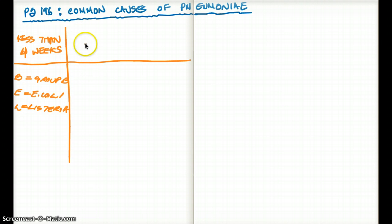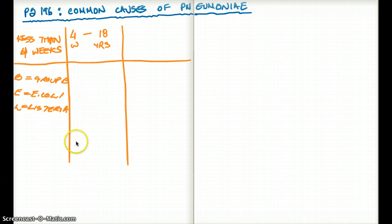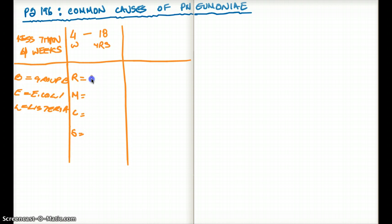The second category deals with 4 weeks to 18 years, and we use the mnemonic 'Runtz May Cough Sputum.' R is for RSV, M is for Mycoplasma, C is for Chlamydia, and S is for Strep pneumo. These are the most common causes of pneumonia between 4 weeks to 18 years.